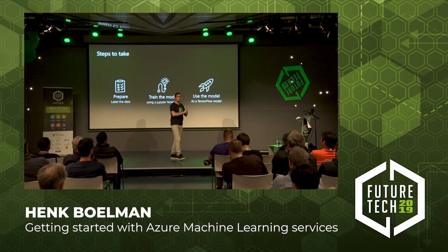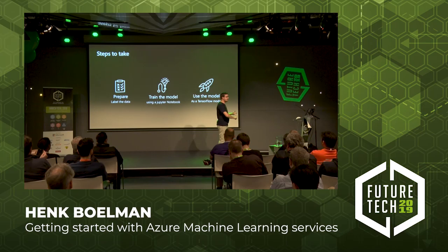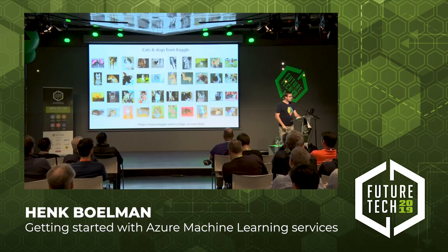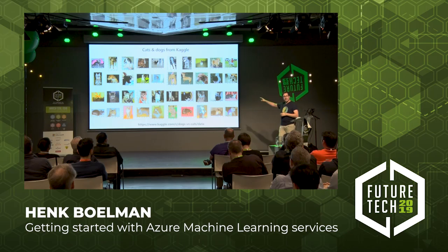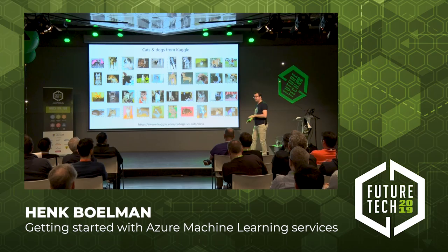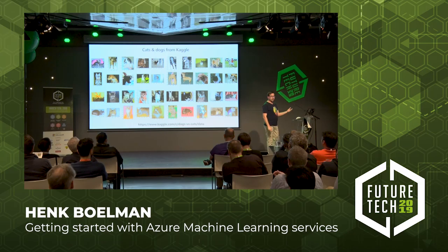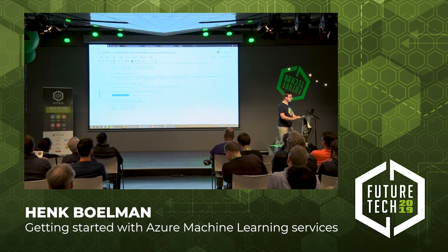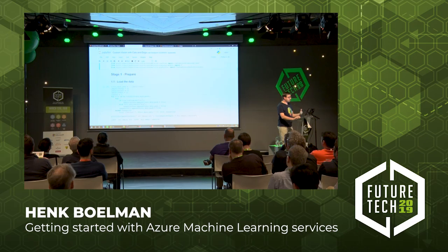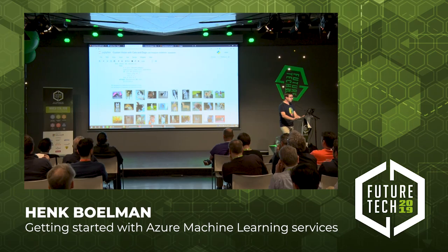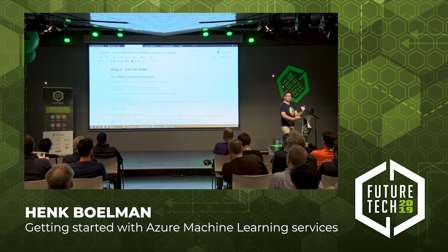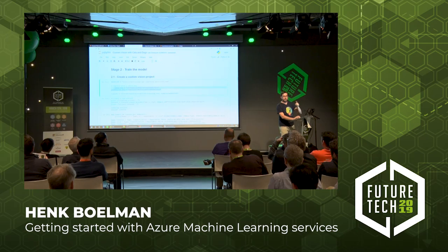To use Custom Vision, you do three steps: prepare your data, upload and train it, then start using it. On Kaggle there is a cats and dogs dataset with 25,000 images, nicely sorted. In a Jupyter notebook, you sort your data into cats and dogs, create a project using a training key and prediction key from the Azure portal, and select a domain. There are many domains like food or retail for clothes, and not all domains are exportable — so choose wisely if you want to run it locally.